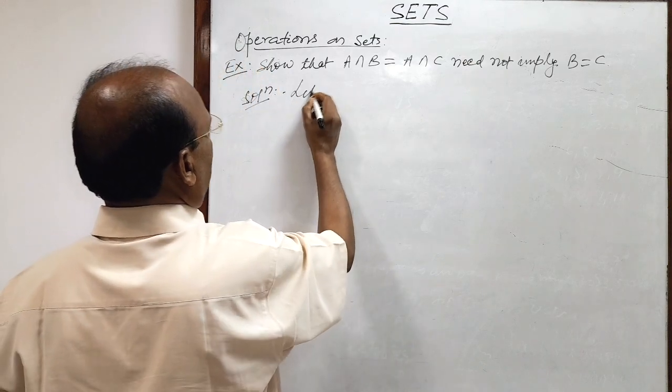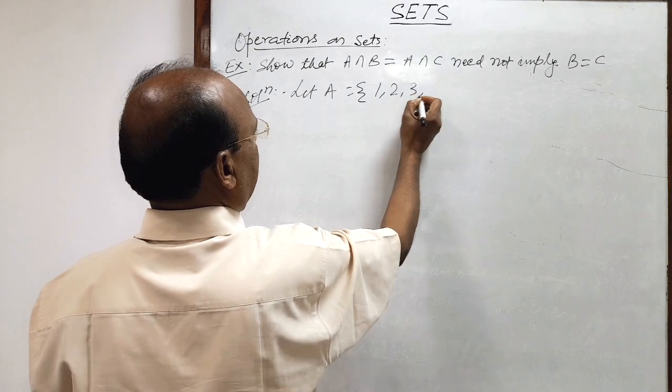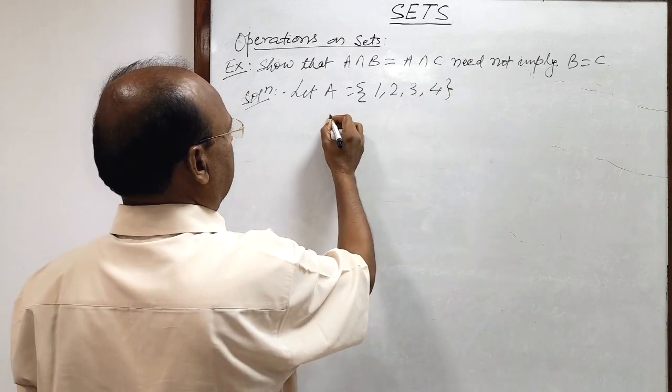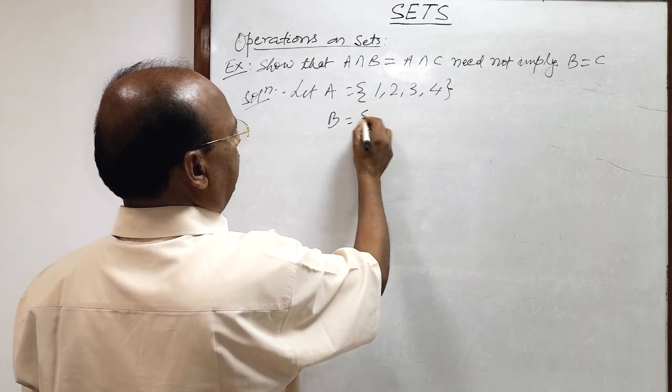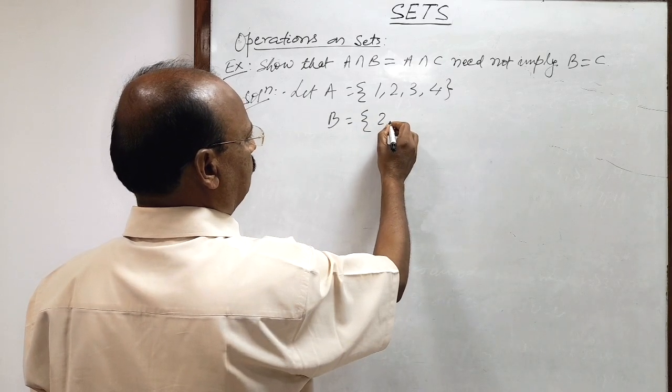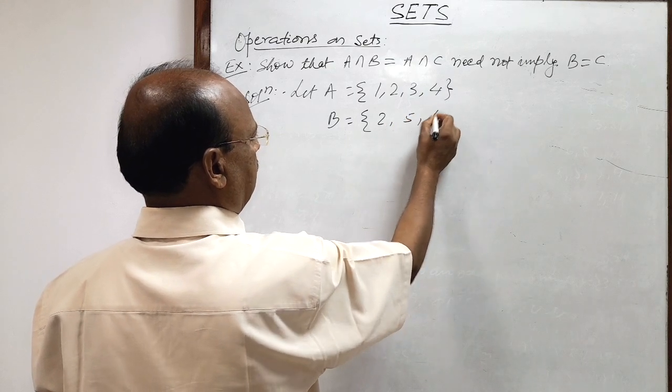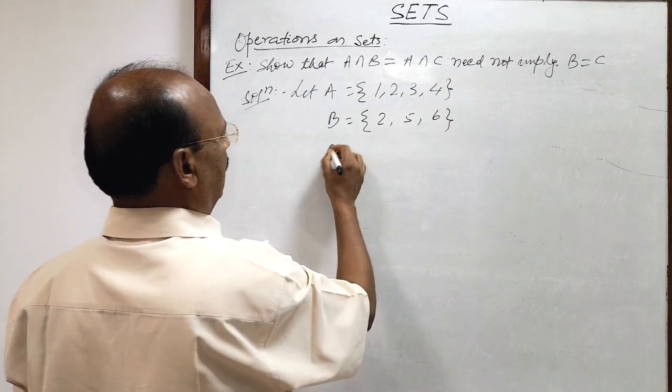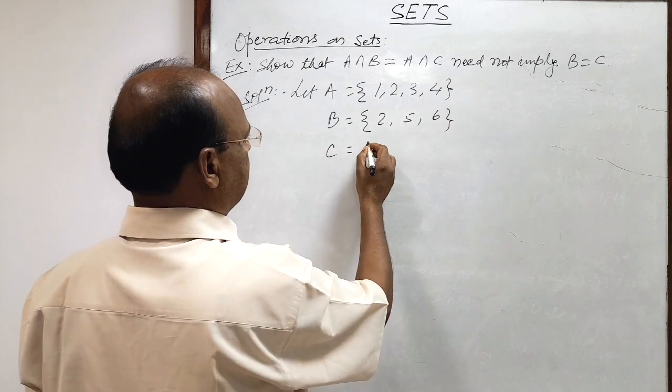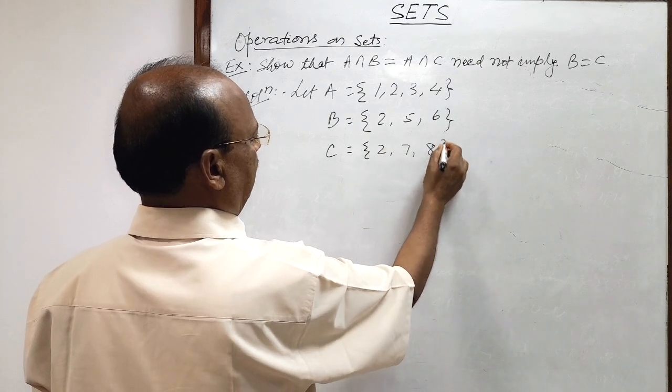So let us suppose that set A is having elements 1, 2, 3 and 4. And set B is having elements 2, 5, 6. And set C having elements 2, 7, 8.